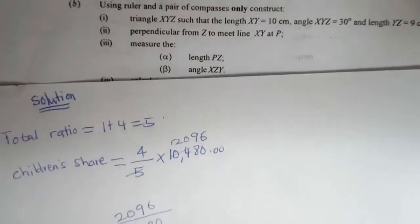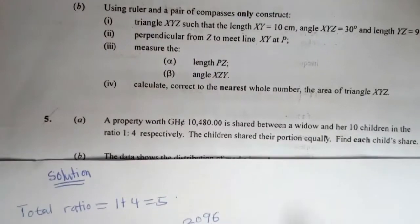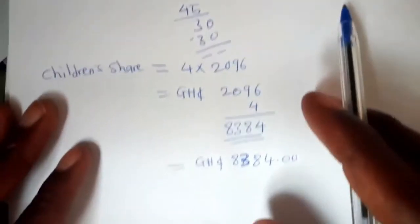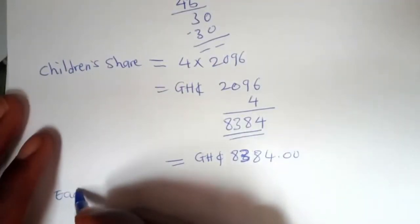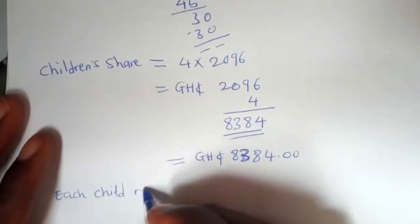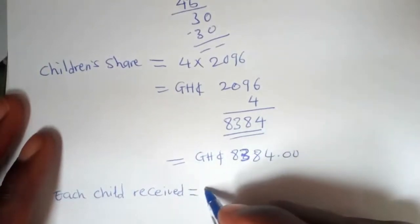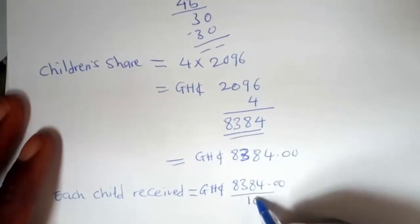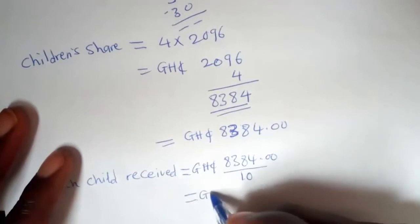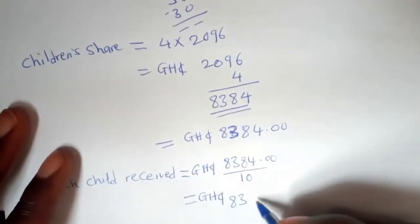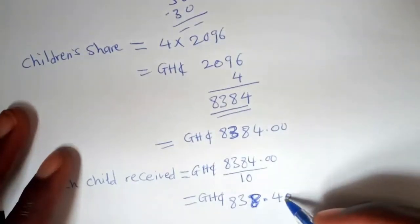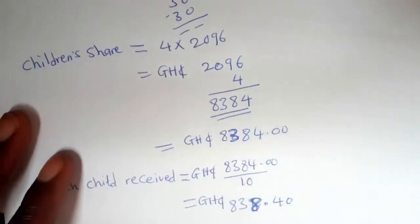We were told there are 10 children and they shared their portion equally. So we divide the total children's share of 8,384 Ghana cedis by 10. Each child received 8,384 divided by 10, which gives us 838.40 Ghana cedis. That is what each child received.